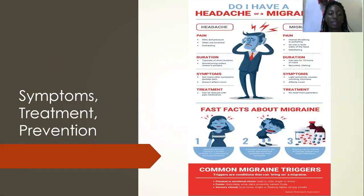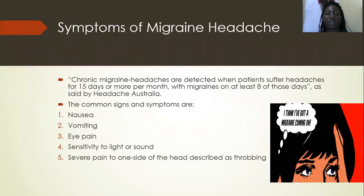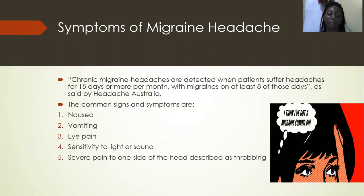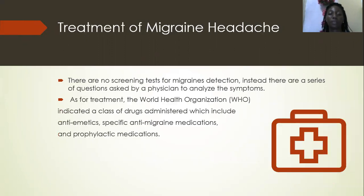Symptoms, treatment, and prevention. Symptoms: when a patient suffers 15 days or more per month with headaches, with migraines on at least eight of those days, the common signs and symptoms are nausea, vomiting, eye pain, sensitivity to light or sun, and severe pain to one side of the head described as throbbing.